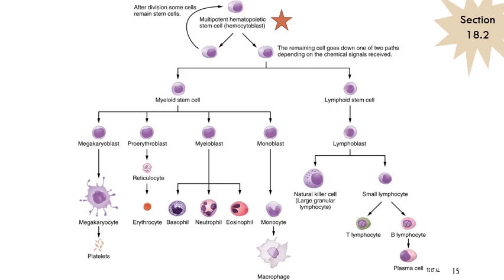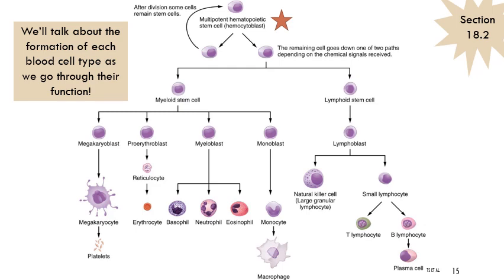You would never be asked a detailed question about the full hematopoiesis schematic. We'll focus on different blood cell types individually — how platelets, erythrocytes, and white blood cells are formed, taking each one at a time. You need to know groupings for white blood cells, and how red blood cells and platelets are produced, but you wouldn't need to fill out the full diagram.